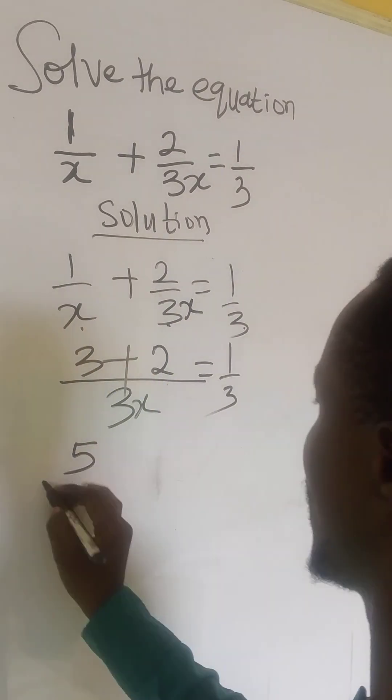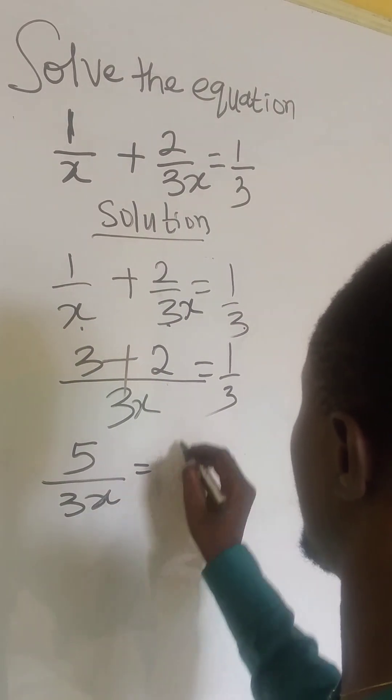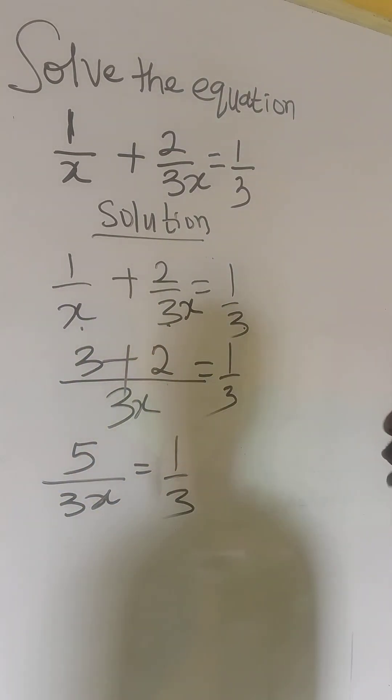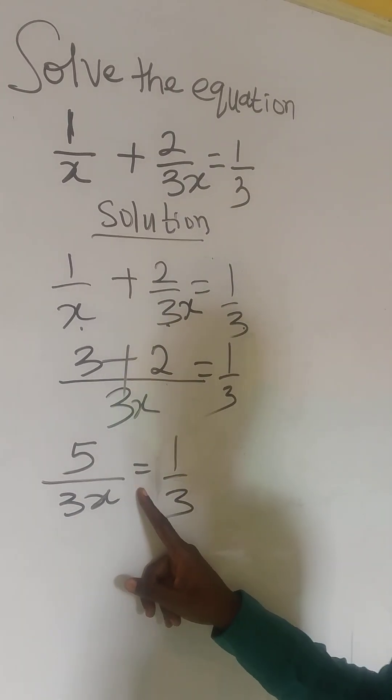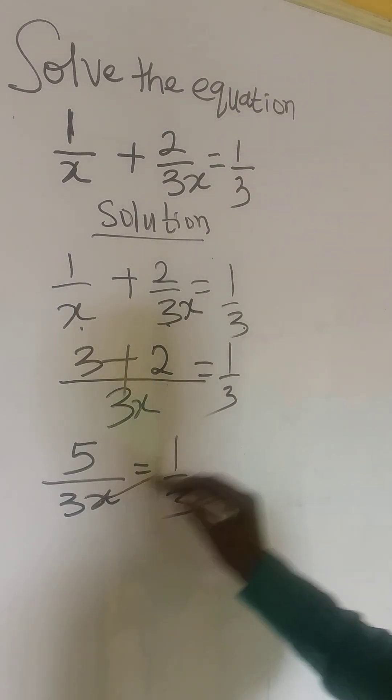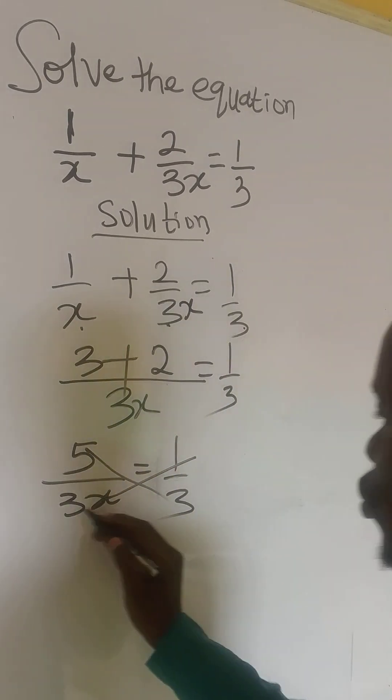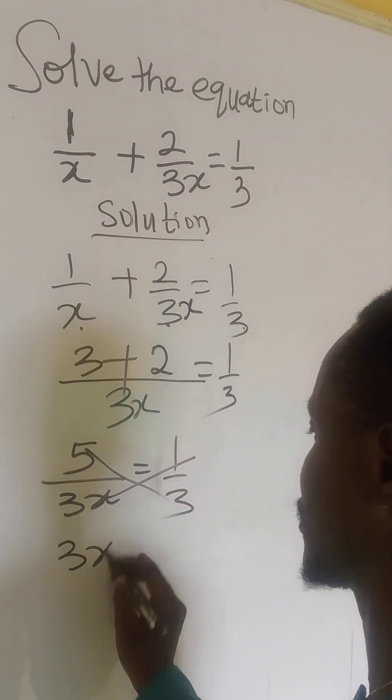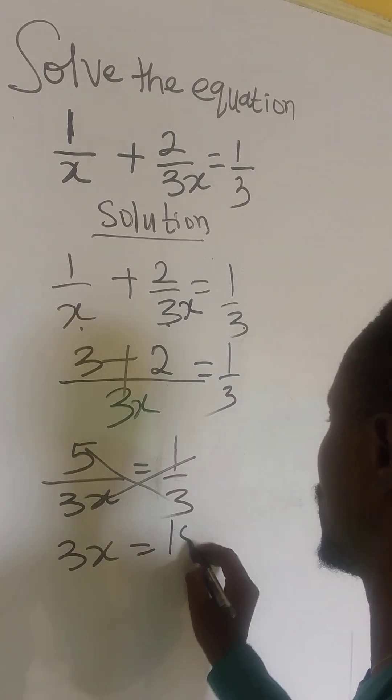We now have 5 over 3x equals to 1 over 3. Two fractions separated by an equal to sign, what we do is to cross multiply. So, 3x times 1 gives us 3x and 3 times 5 gives us 15.